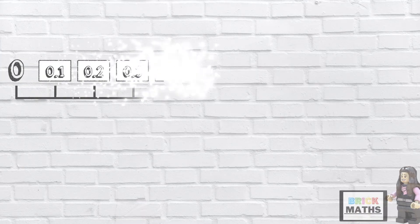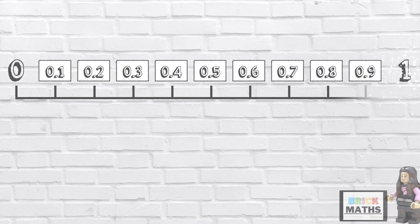Here is a number line going from 0 to 1. When we round decimal numbers, we either round them up to the next whole number, which here would be 1, or we round them down to the previous whole number, which here would be 0.